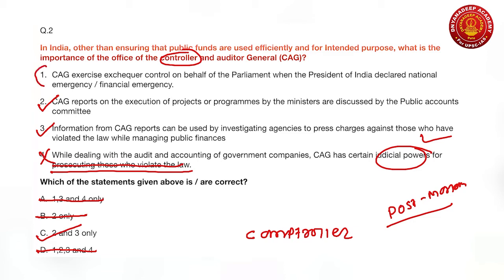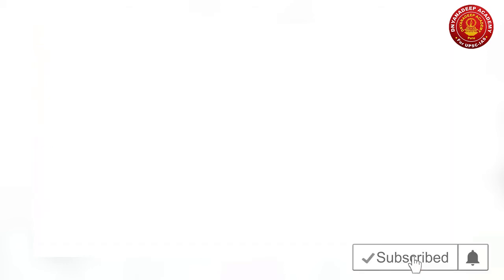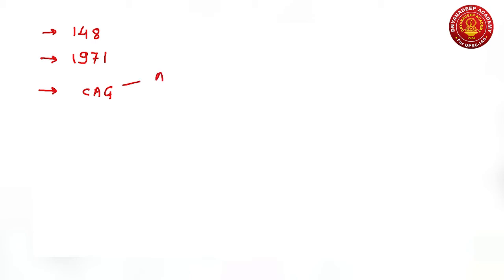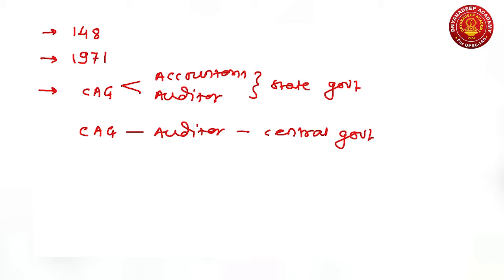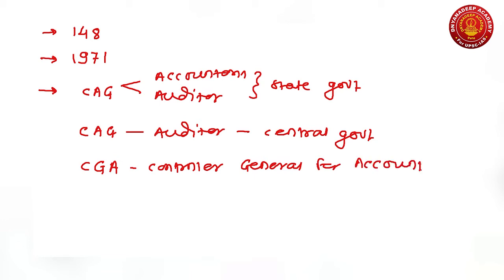Some important facts about CAG for your examination: the most important article is Article 148. The law relating to CAG's functions is the CAG (Functions, Powers, Authorities and Responsibilities) Act of 1971. CAG acts as both accountant and auditor for state governments, whereas for the central government, CAG acts only as auditor — not as accountant. There is a separate office called the CGA, Controller General of Accounts, which acts as accountant for the central government.